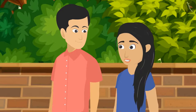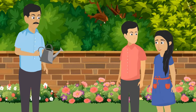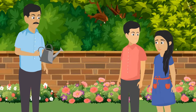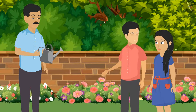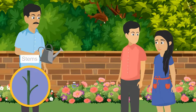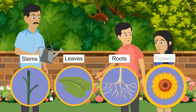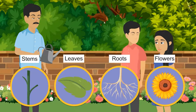Pankaj, yesterday we discussed about the types of plants. Now let's discuss about the parts of plants. It is very easy, Pushpa. The main parts of plants are stem, leaves, roots, and flowers.